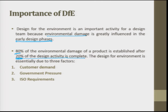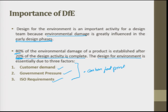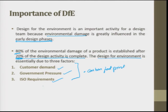Design for environment is essentially due to three factors: customer demand, government pressure, and ISO requirements. Today people are talking about carbon footprints, and there is governmental pressure — that is why new auto emission norms keep coming: Bharath 4, Bharath 5, Bharath 6. Same with ISO requirements: what happens to water in a tanner industry, paint industry, or pharmaceutical industry after processing? All these things are becoming very stringent, and it is required for any company to go international.